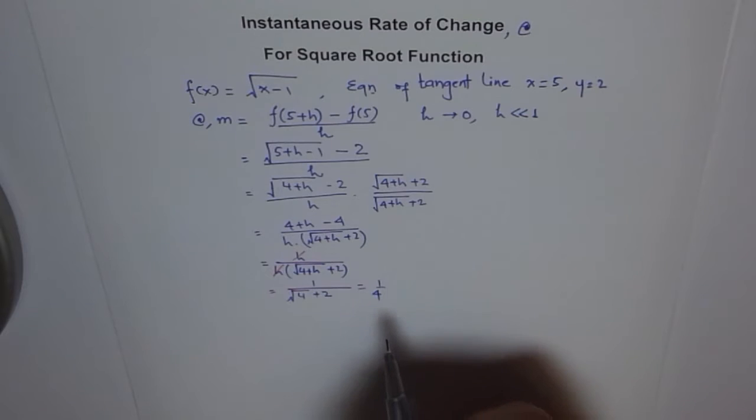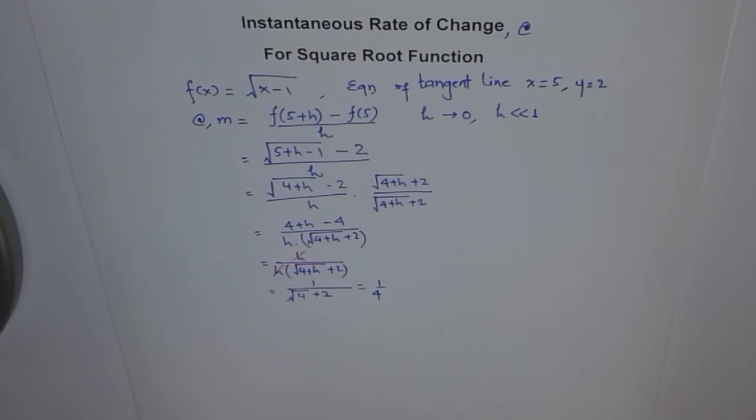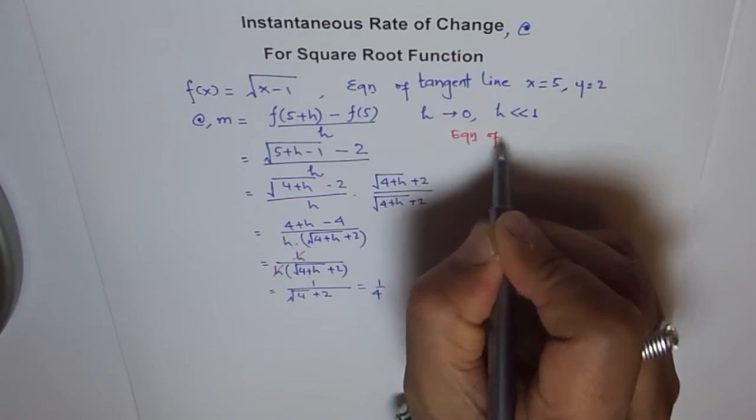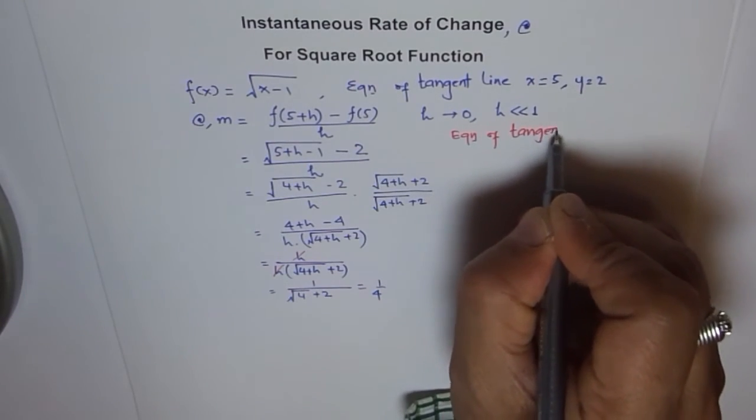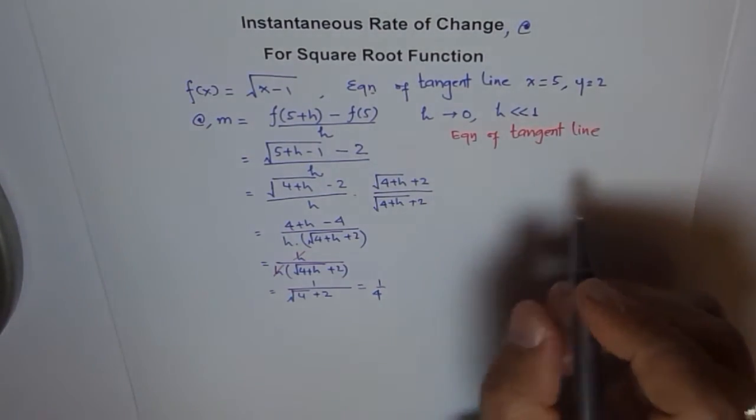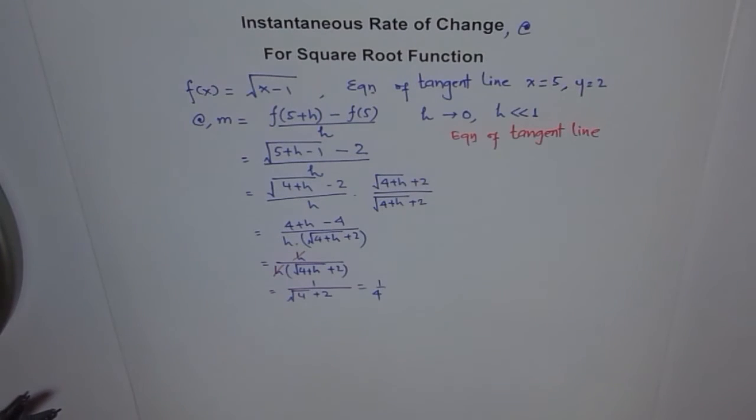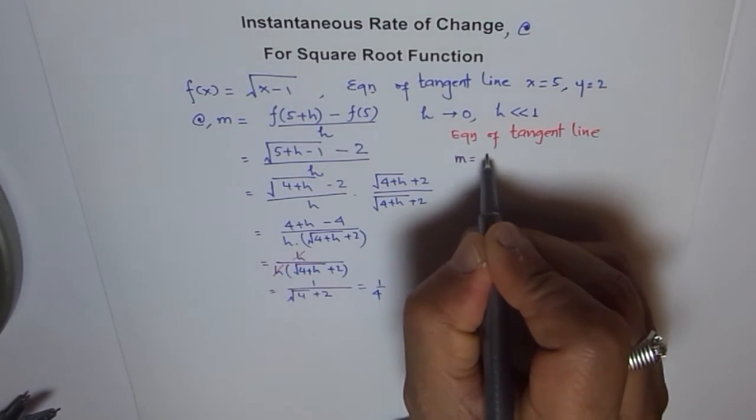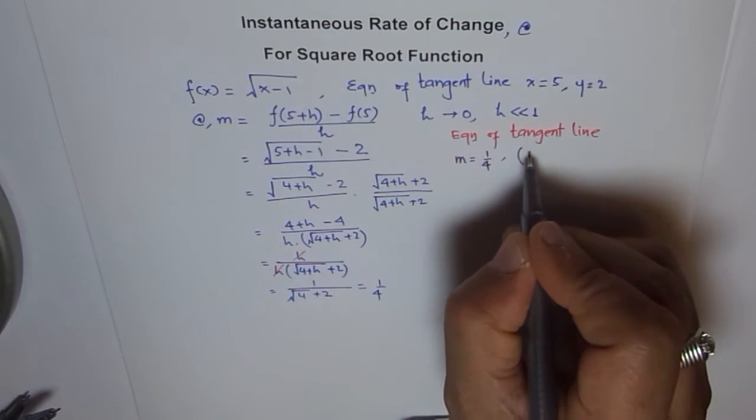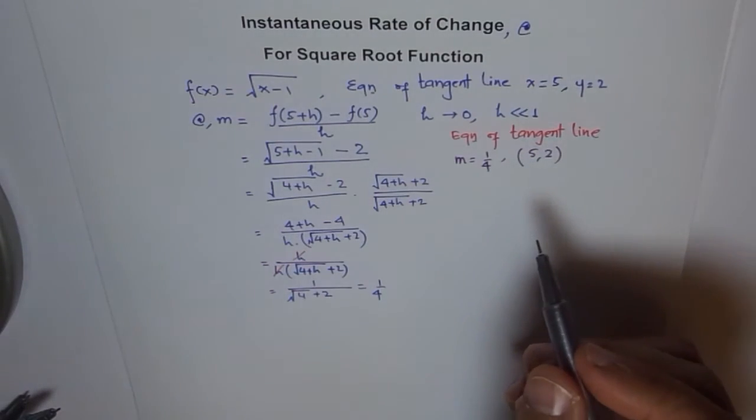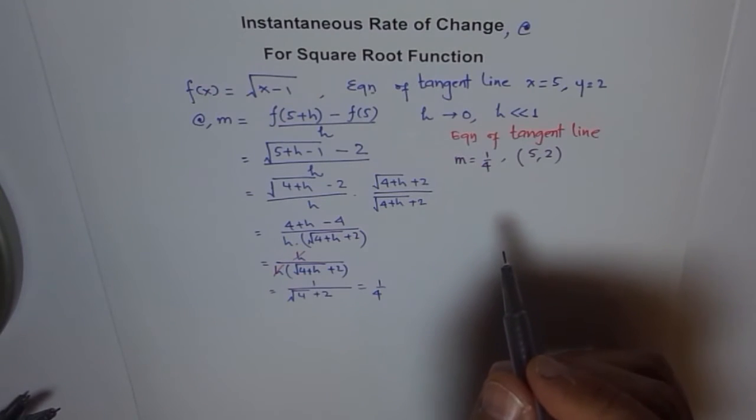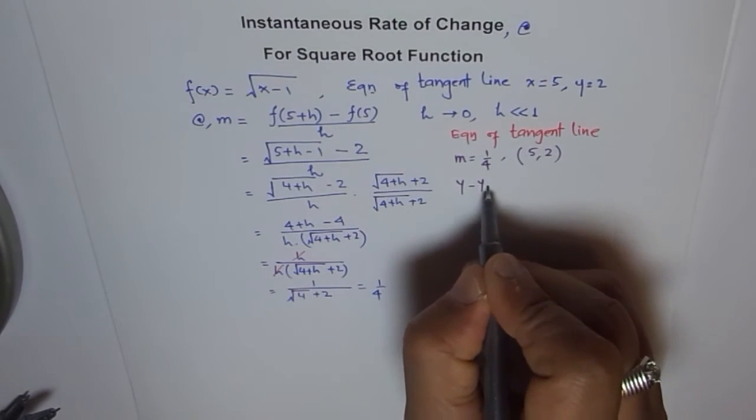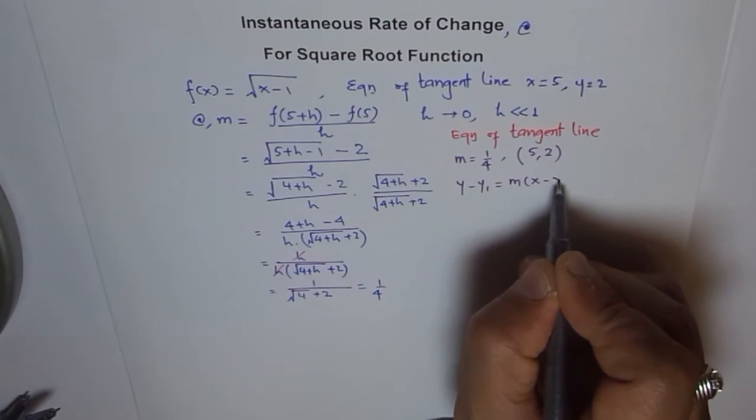Now what do we need? We know the slope and we know the point. So we'll find the equation of the line. That's so simple as that. So equation of tangent line. Now for that, we have slope given to us at x equals 5. We just now found that the slope of the line is 1 over 4. And the point is 5, 2. So we can use, this time we will use the equation of the line as y minus y₁ equals to m times x minus x₁.